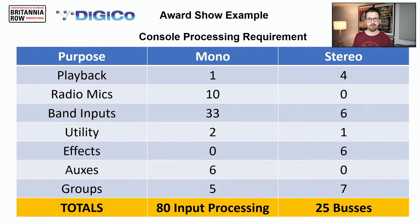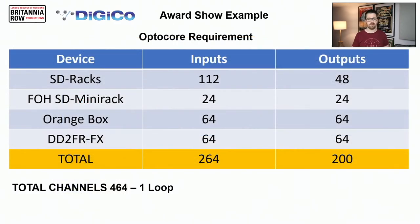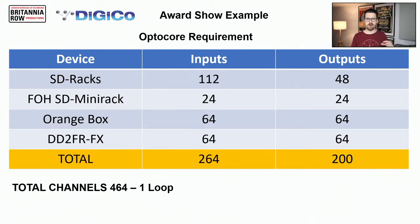Once I've worked this out, I also need to think about whether the optical loop can handle the quantity of audio I/O devices I have. I add up the total quantity based on the cards inserted in the racks and the I/O devices selected. Between the SD rack, the front-of-house mini rack, the orange box, and the DD2, in total I need 464 channels on the loop — which keeps us 40 channels under the limit, so we're good.